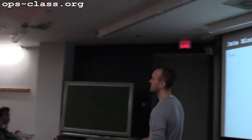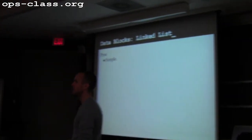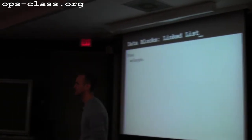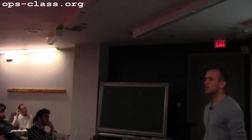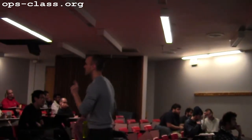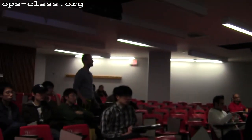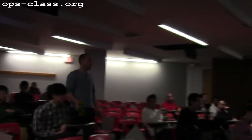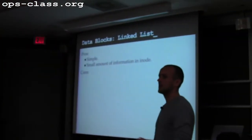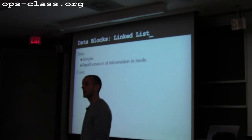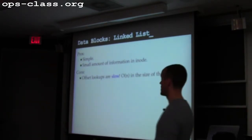What are the pros of this linked list approach? It's simple — the inode doesn't have to store much information, just a pointer to the first data block. But the problem: translating an offset requires walking the linked list — you potentially have to walk a large portion of the file contents just to look up an offset. So offset lookups are O(n) — that's the potential con.